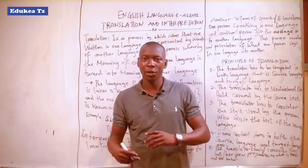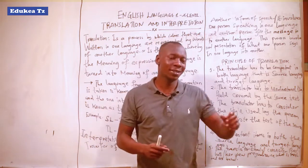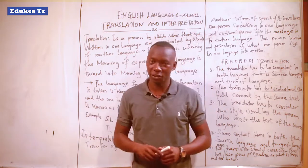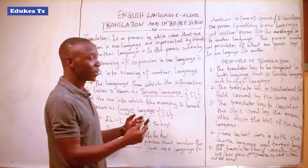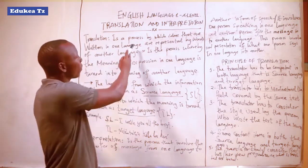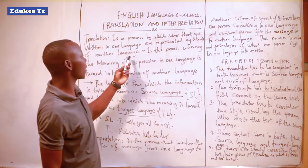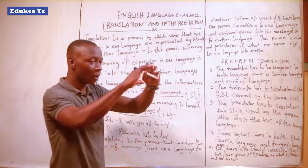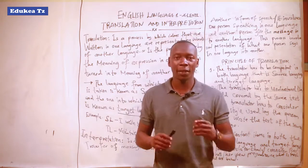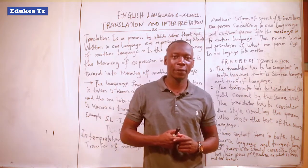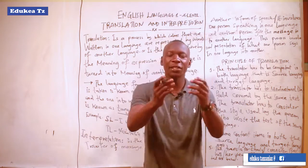When you change one language into another language in the case of written form, that is what we call translation. But when you change one language into another language in the case of oral presentation, that is what we call interpretation. Translation is the process by which ideas written in one language are represented by words of another language. For example, if ideas are written in French, you change them into English in written form — that is translation.